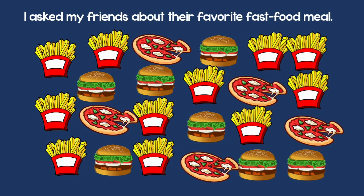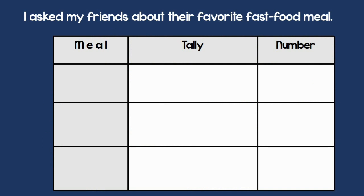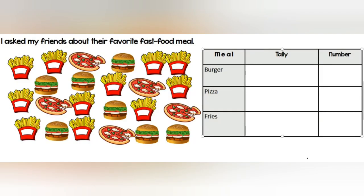I asked my friends about their favorite fast food meal and then I made a table. Their favorite meals were either burgers, pizzas, or fries. I'm going to fill out my tally graph now. I cross out a fry and put a tally mark in the fries area. I cross out pizza, put a mark in the pizza area, and I will keep doing so until I fill out my table. Notice that all the foods are mixed up, so each time I cross out one food I am going to put it in the correct place.